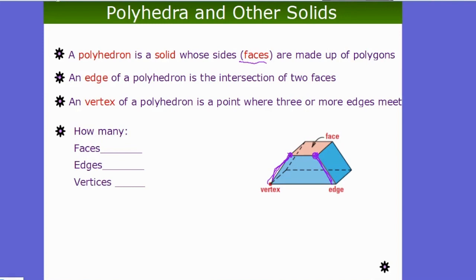In this example, how many faces do we have? There are four around the side — the lateral piece — and one on top and one on the bottom, so we have six faces. There are twelve edges: four around the side, four on top, four on the bottom. And there are eight vertices: four up top and four on the bottom.